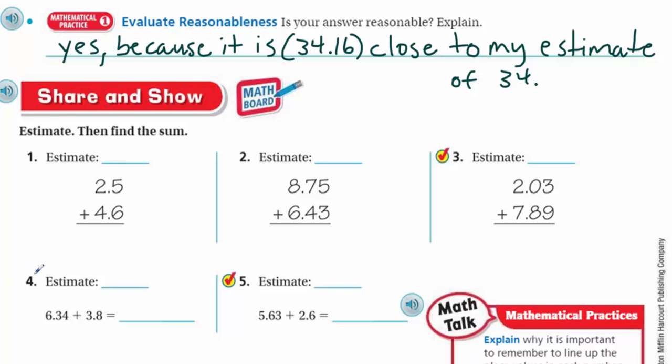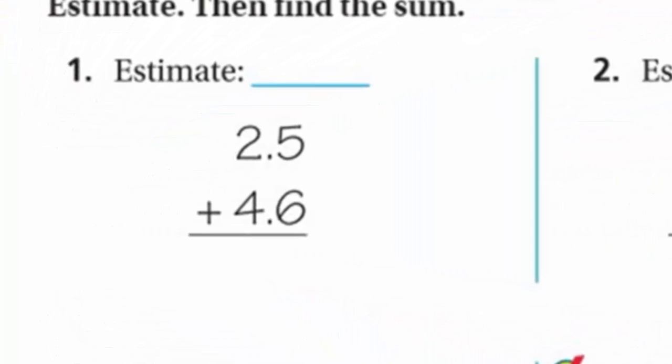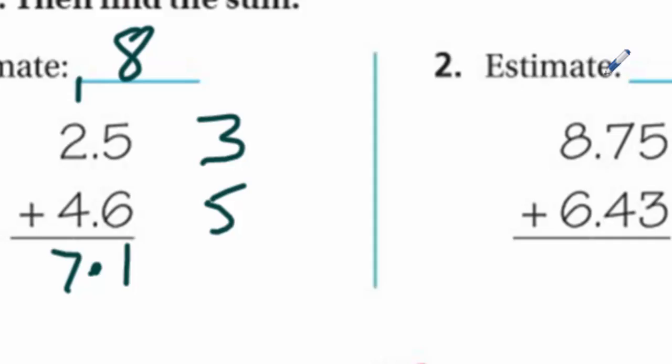Now share and show. Estimate. Then find the sum. Okay. So I'm going to look at 2.5. To me it's about three. 4.6 is greater than five. Up the score. That's about five. So three plus five? Eight. All right. Now I'll go ahead and solve. Ah decimal. Bring it on down. I should do that first thing. Five plus six is eleven. Carry the one. Four plus two is six plus one is seven. Woohoo. Yeah yeah. This is so easy.